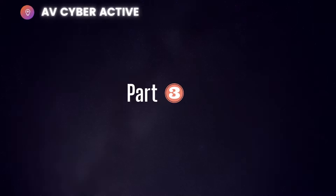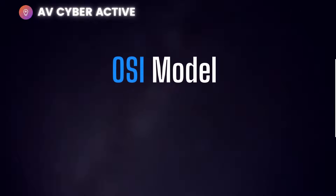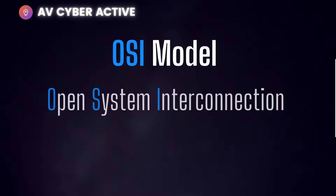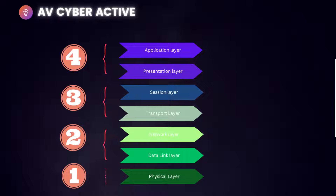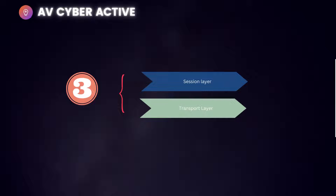This is part three of the video series where I explain the OSI model in brief and explain the different protocols and how they are attacked. Today we're going to cover the transport and session layers, with two examples of attacks being carried out at each layer.